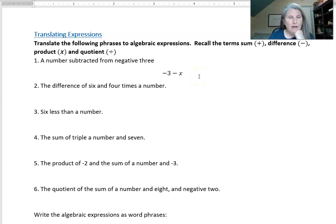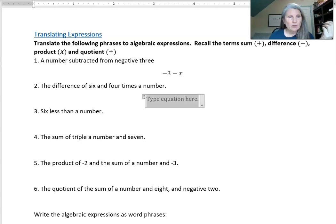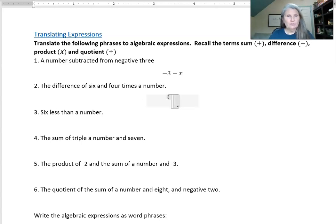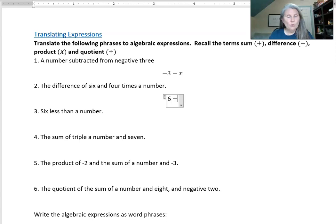I'm doing a lot of subtraction examples because those are the ones people have a little bit harder time with. The difference of six and four times a number - again, a difference is subtraction. When you say a difference you have to write your expression in the order that it was stated. So I have the difference of six and then I'm subtracting four times a number, which I can use any variable I want here unless I'm given some specific directions. So this is the difference of six and four times a number.